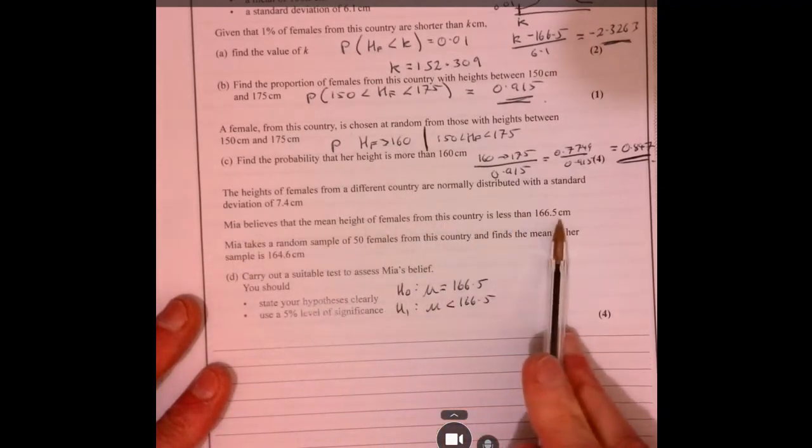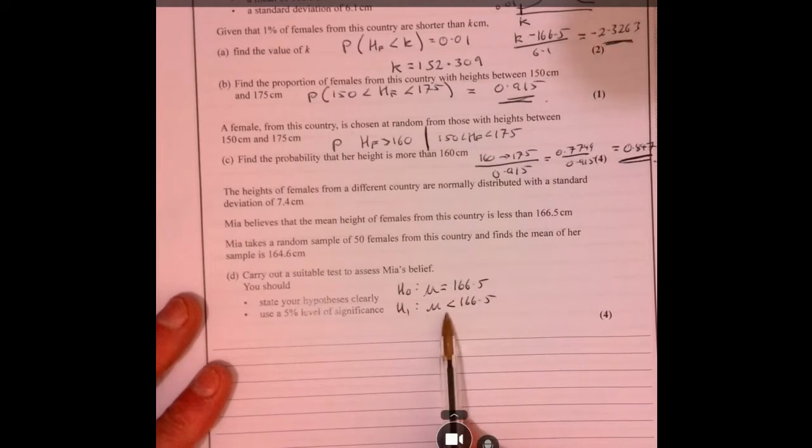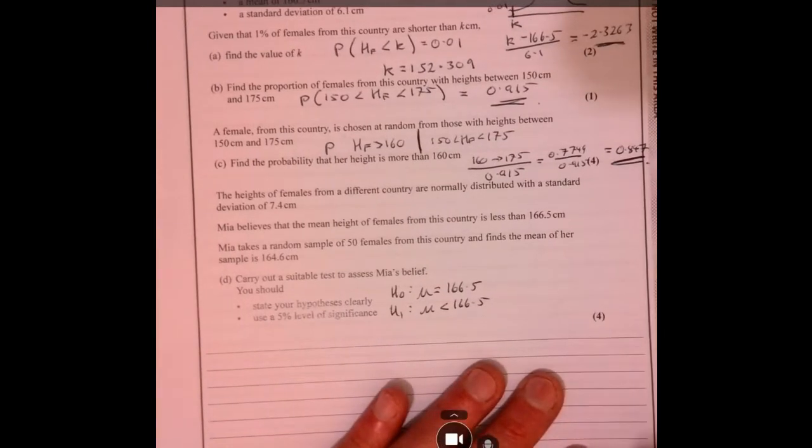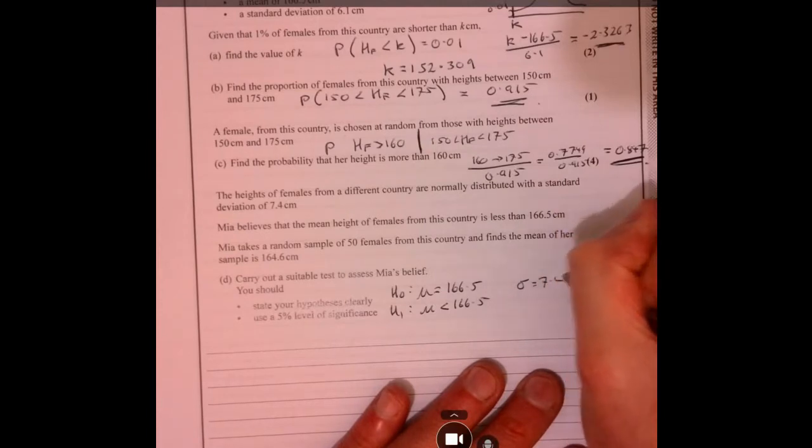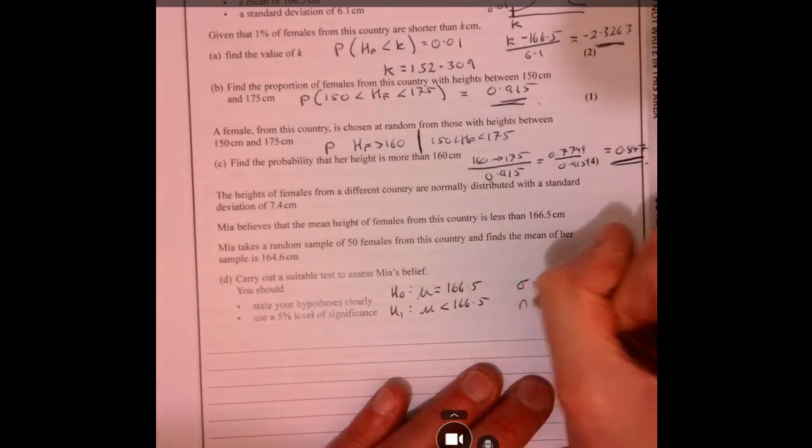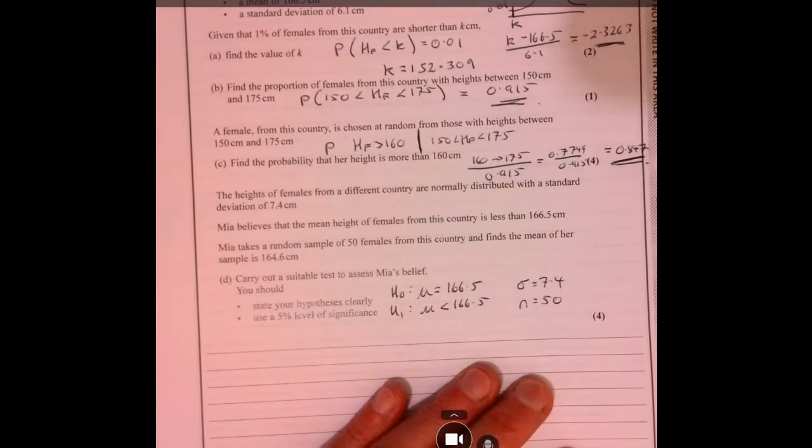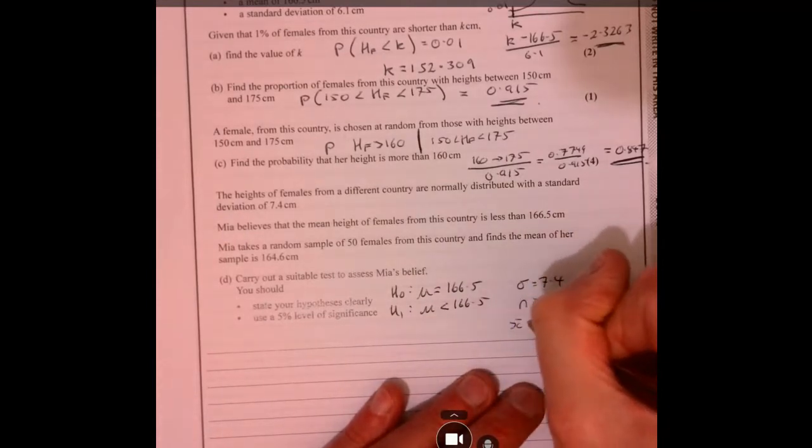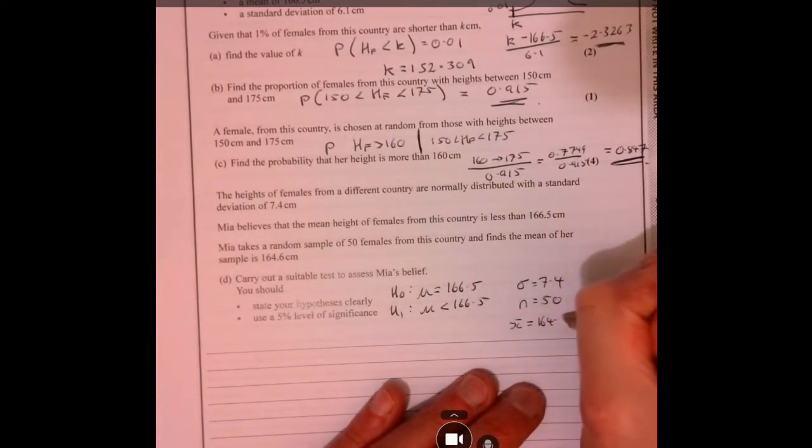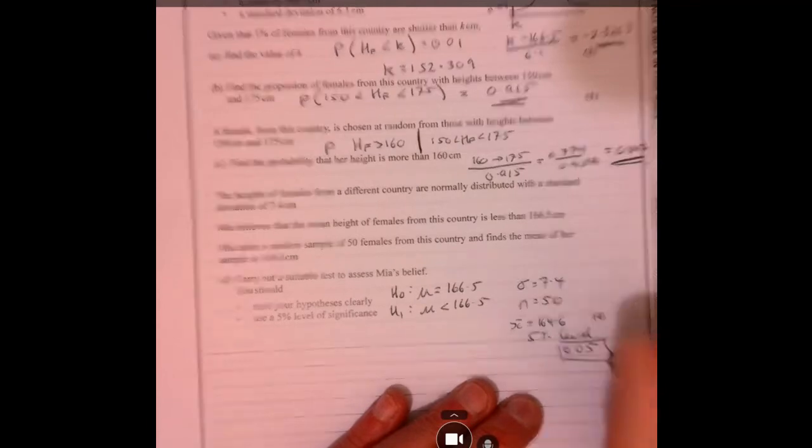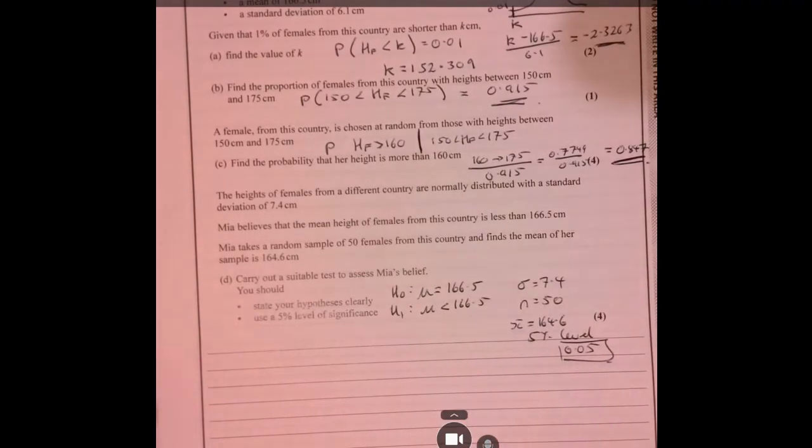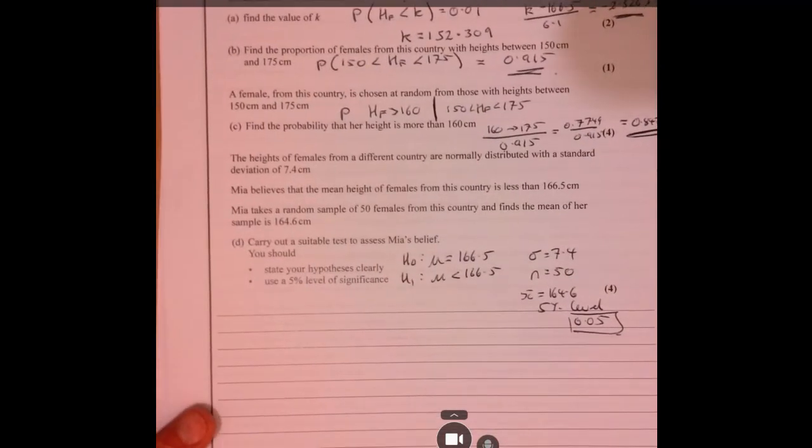Mean height of females is less than. Let's summarize everything else that we've got. We're told that the new standard deviation is 7.4, N is 50, X bar equals 164.6, and we're working at 5% level or 0.05. So that's everything summarized that we've got just there.